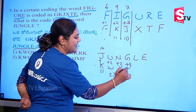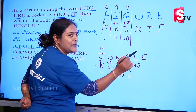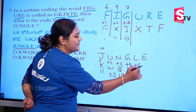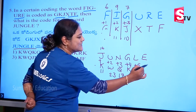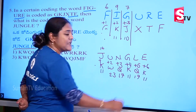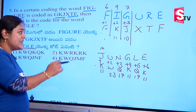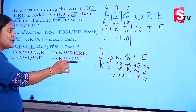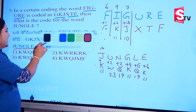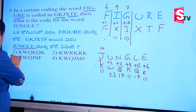K-K, then plus 5. 12 plus 5 is 17 — take Q. Then 5 plus 6 is 11 — take K.